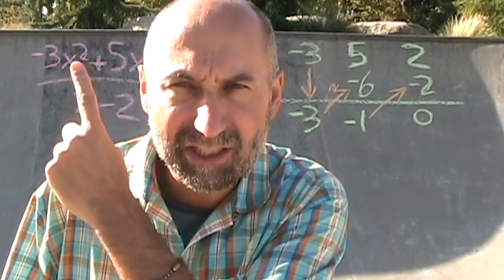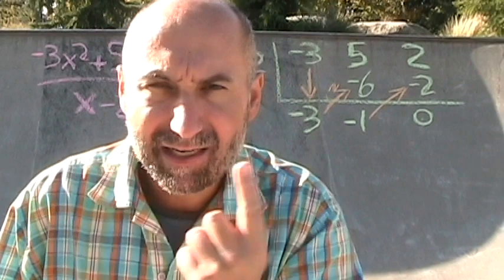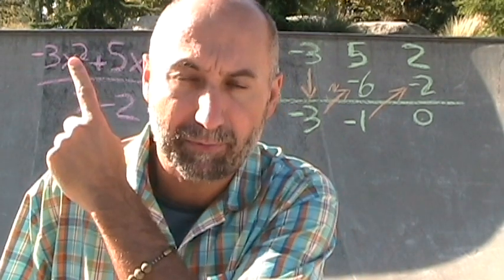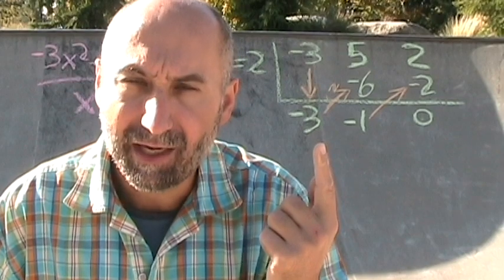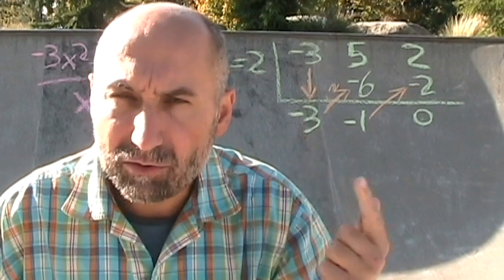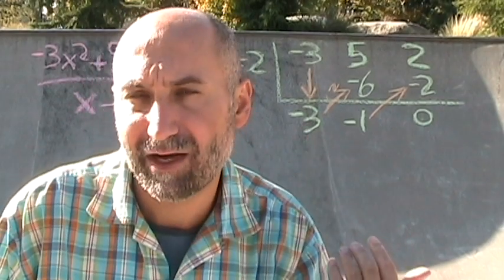If this was X cubed and you took out an X, this would be X squared. If this was X to the power of 4, you took out an X, this would be X cubed. Your next term would be X cubed. And then from there, you would have to continue doing the synthetic division until you found all the factors.